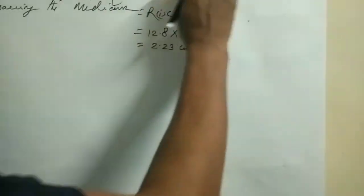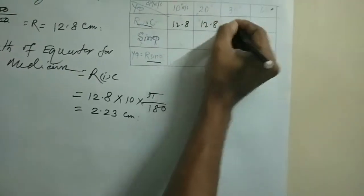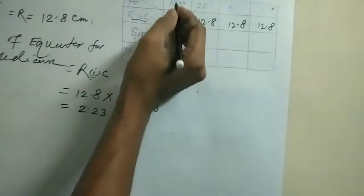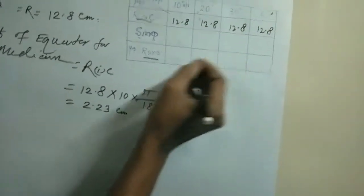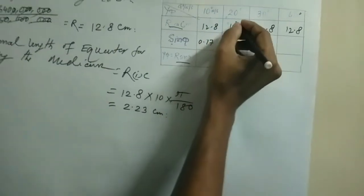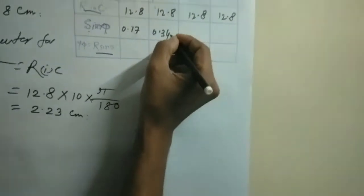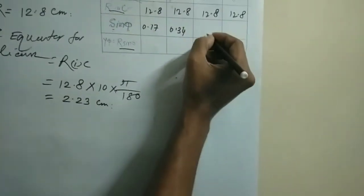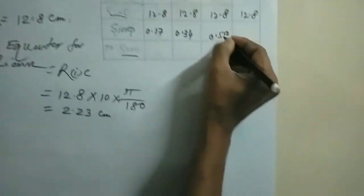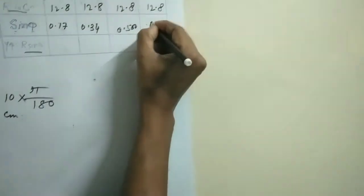Now this gives 6 cm. For the parallels, we use the formula R·sin φ. The sin values are: sin 10° = 0.17, sin 20° = 0.34, sin 30° = 0.50, sin 40° = 0.64.